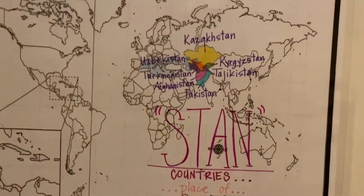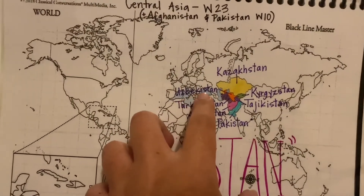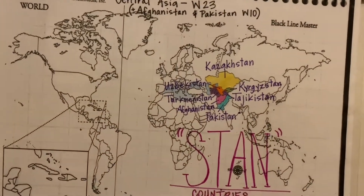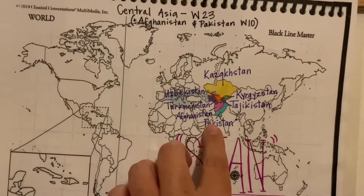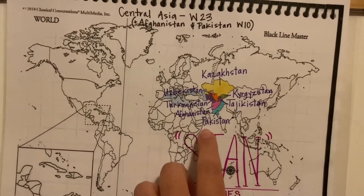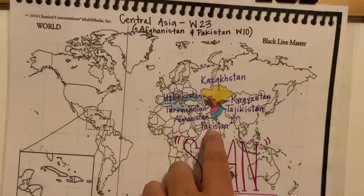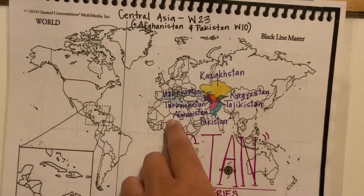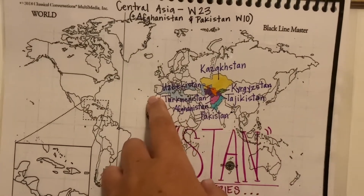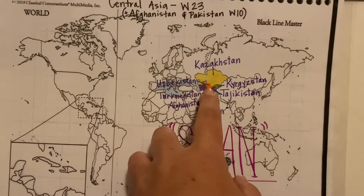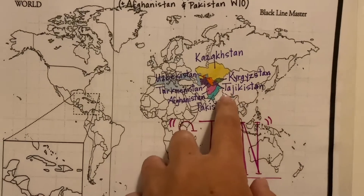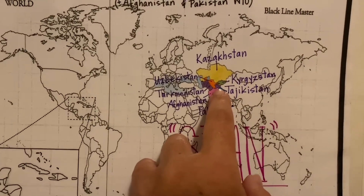Very good. When you get to Uzbekistan, this is the part where you can tell your kids to really ooh it up — Uzbekistan. One more time, are you ready? What are the Stan countries? Pakistan, Afghanistan, Turkmenistan — here it goes — Uzbekistan, Kazakhstan, Kyrgyzstan, Tajikistan.